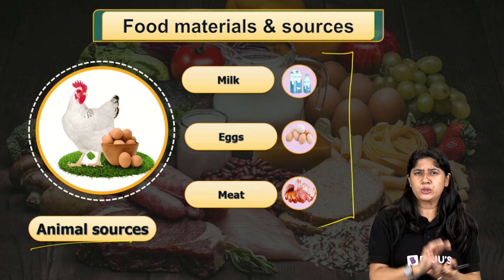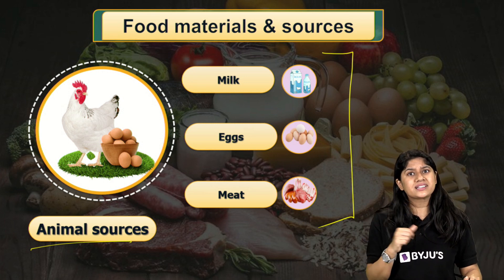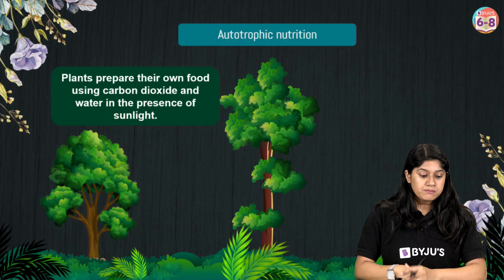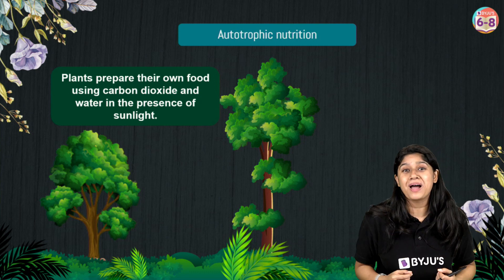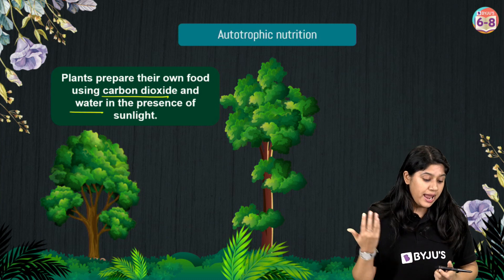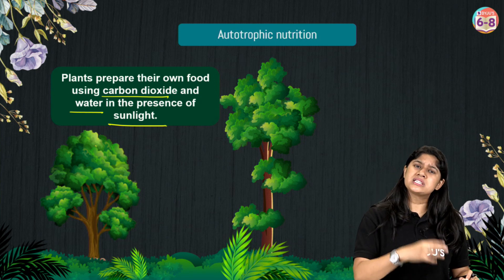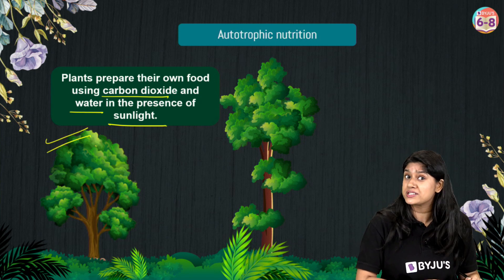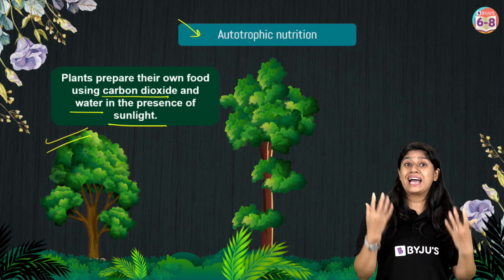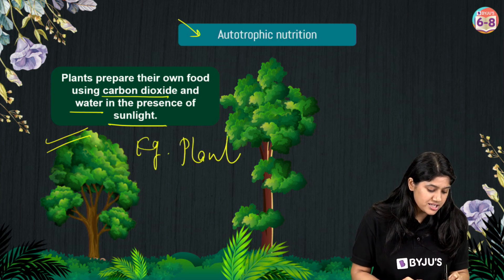Now we definitely eat plants, but how are plants getting their nutrients or making their food so that we can consume them and get energy? Plants make their food by the process of photosynthesis. They take up carbon dioxide from the air, water from the soil through their roots, and in the presence of sunlight and chlorophyll — an important pigment that gives a green color to the plant, present in the chloroplast in the leaves — plants make their food. That's why we call them autotrophs, and they use the autotrophic mode of nutrition. Those organisms that can make their own food are called autotrophs.